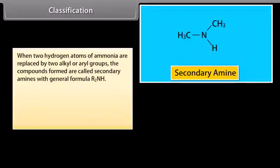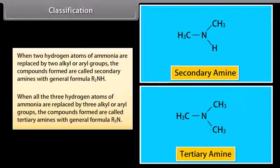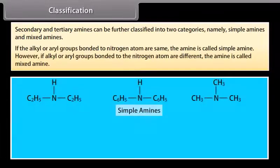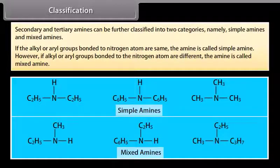When two hydrogen atoms of ammonia are replaced by two alkyl or aryl groups, the compounds formed are called secondary amines with general formula R2NH. When all three hydrogen atoms of ammonia are replaced by three alkyl or aryl groups, the compounds formed are called tertiary amines with general formula R3N. Secondary and tertiary amines can be further classified into simple amines and mixed amines. If the alkyl or aryl groups bonded to nitrogen are the same, the amine is called a simple amine; if they are different, it is called a mixed amine.